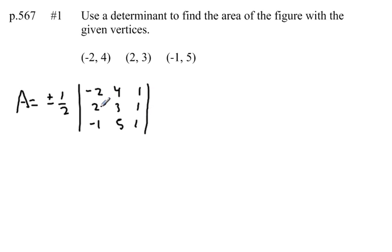Those straight up and down lines stand for the determinant of that matrix. The plus or minus here means that no matter what answer we get for this determinant, we make our final answer positive.